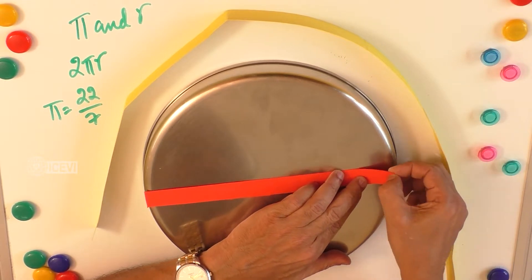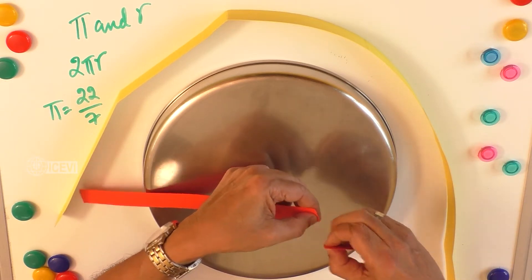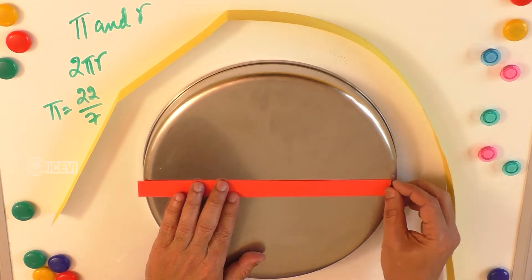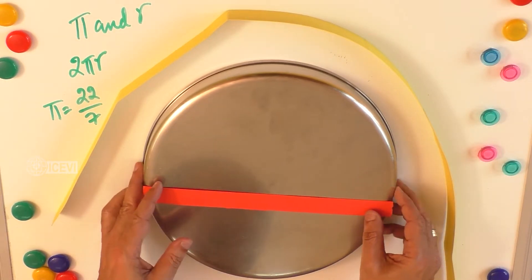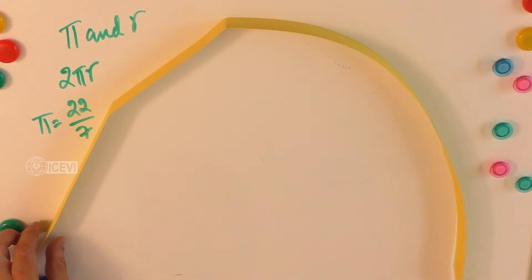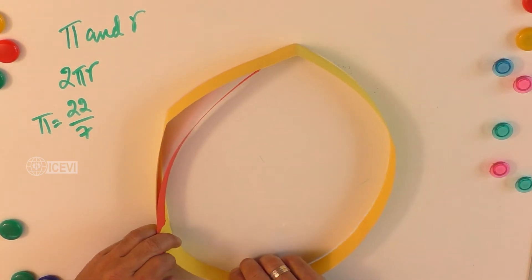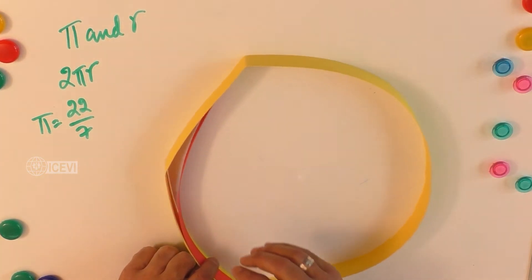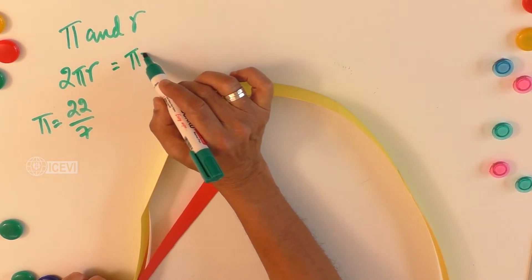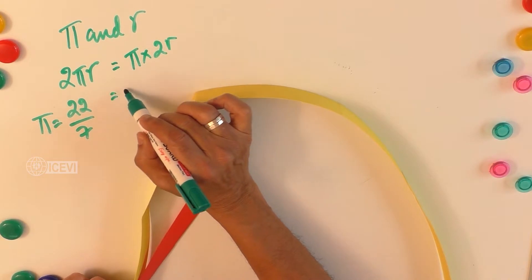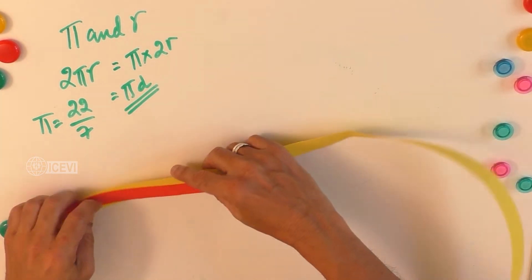I have made a paper strip which represents the diameter of the plate. It need not be exact — an approximate measurement is okay. Now let us find the relationship between the circumference of this plate and the diameter. Note that 2πr is nothing but π times 2r, which equals π times d — that is, π times the diameter.